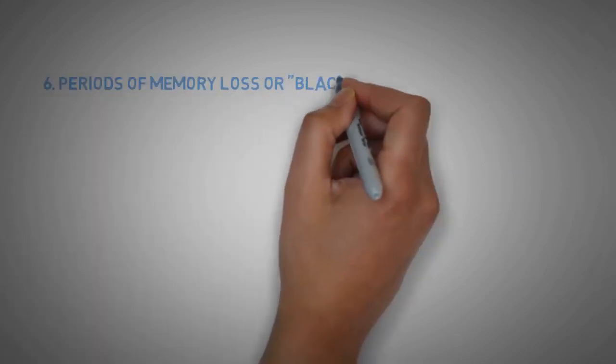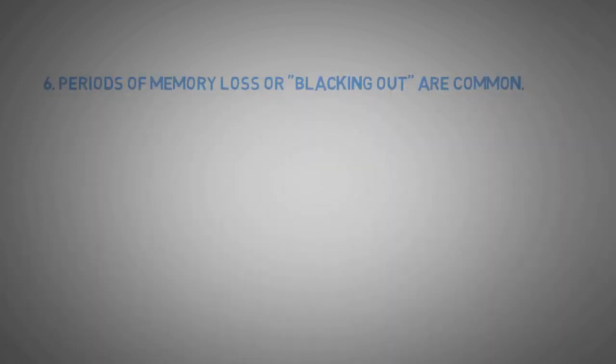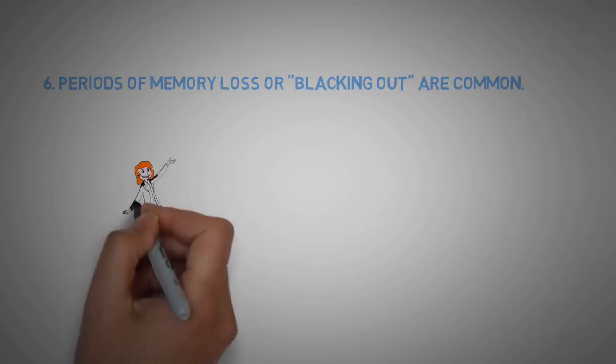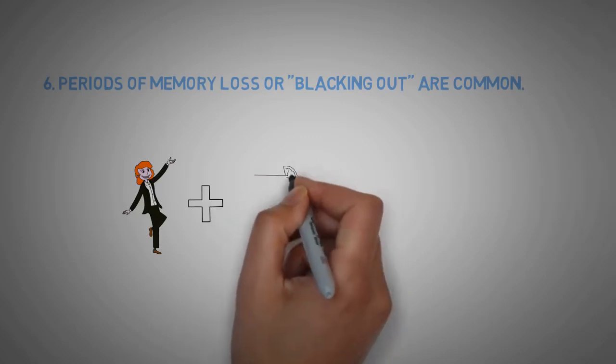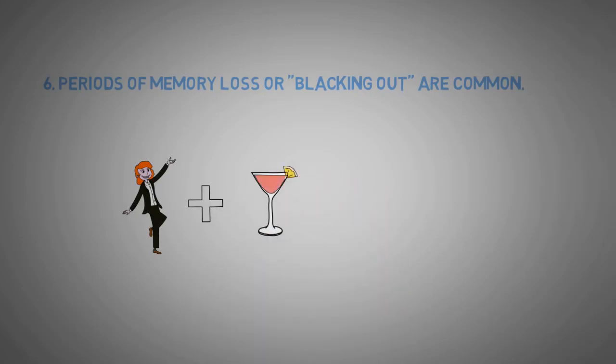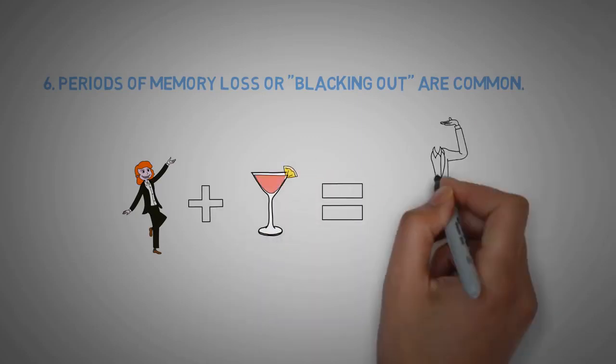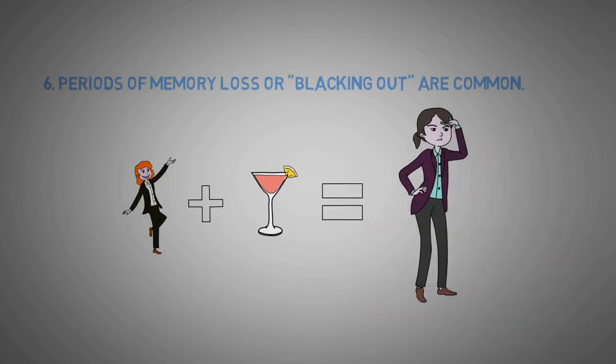6. Periods of memory loss or blacking out are common. Many alcoholics will take part in activities that they have no recollection of the following day. They may not seem extremely intoxicated at the time, but they are unable to remember events that took place.